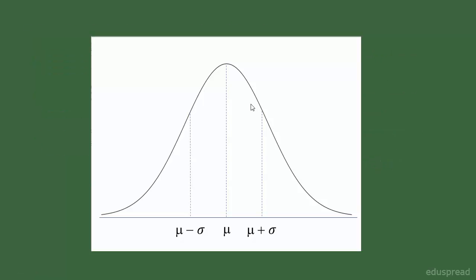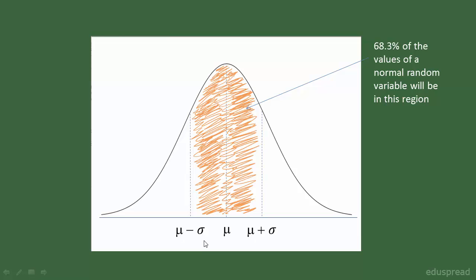Have a look at this normal distribution with mean mu and standard deviation sigma. What I am trying to say is if I add and subtract one standard deviation to the mean — so this is mu plus sigma, mean plus standard deviation, and this is mu minus sigma — then 68.3% of the values of a normal random variable will be in this region. In simple terms, the probability that our random variable takes a value between these two intervals is 0.68.